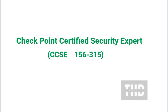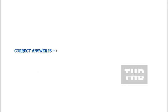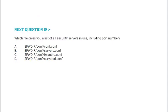Question: In the firewall chain mode, FFF refers to — option A: stateful packets, option B: no match, option C: all packets, option D: stateless packets. Correct answer is option C.